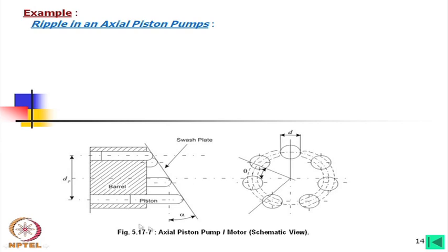An axial piston pump works as follows: the barrel is a cylindrical body with equispaced holes on a pitch circle — in this example, seven holes for seven pistons. The pistons slide on a stationary inclined plate called the swash plate. The tilt angle α can be kept fixed for a fixed-displacement unit or varied for a variable-displacement unit.